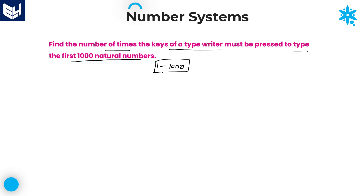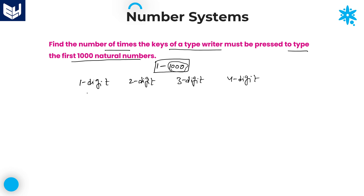To type the first 1000 natural numbers from 1 to 1000, we are having several types of numbers: single digit numbers, 2-digit numbers, 3-digit numbers, and also 4-digit numbers. We are typing up to 1000, which is a 4-digit number. So, how many 4-digit, 3-digit, 2-digit, and single digit numbers are there?